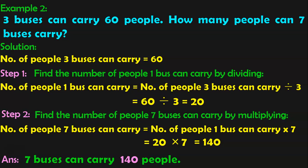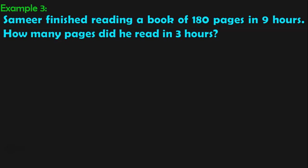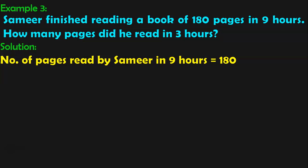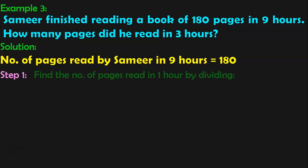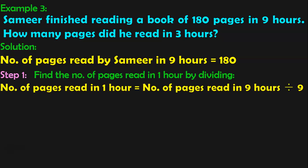Very easy and interesting, isn't it? Let us do the third example now. Samir finished reading a book of 180 pages in 9 hours. How many pages did he read in 3 hours? The first step is to find out how many pages Samir read in 1 hour. The solution: number of pages read by Samir in 9 hours is equal to 180. Step 1 is to find the number of pages read in 1 hour by division. Number of pages read in 1 hour is equal to 180 divided by 9.